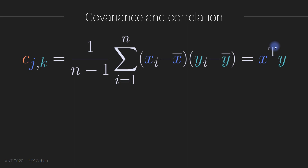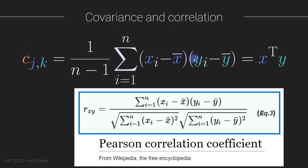You'll remember the dot product from the previous lecture on the Fourier transform — the Fourier transform is implemented by computing the dot product between a complex sine wave and a data time series. It's all the same operation. Basically, we multiply data x by data y over all time points, and that gives us a covariance value between x and y. Looking at the Pearson correlation coefficient from Wikipedia, what I've written out is the same as the numerator of the correlation coefficient, just without the denominator normalization.